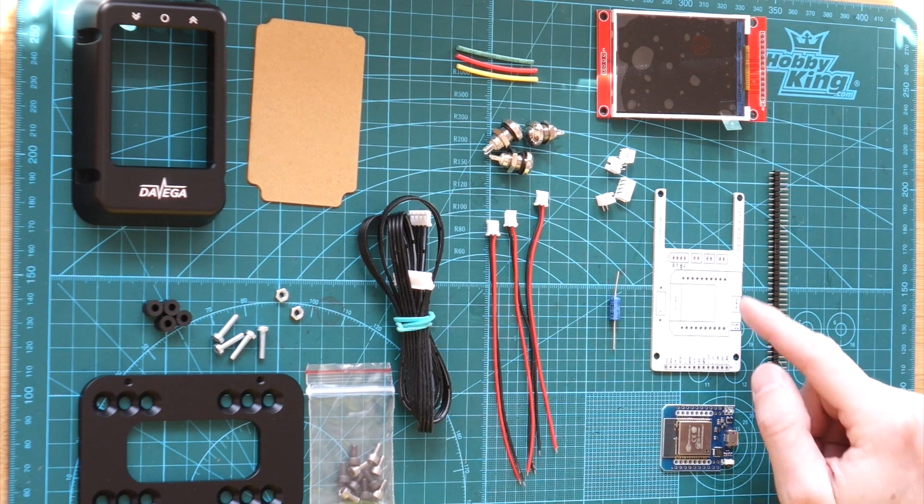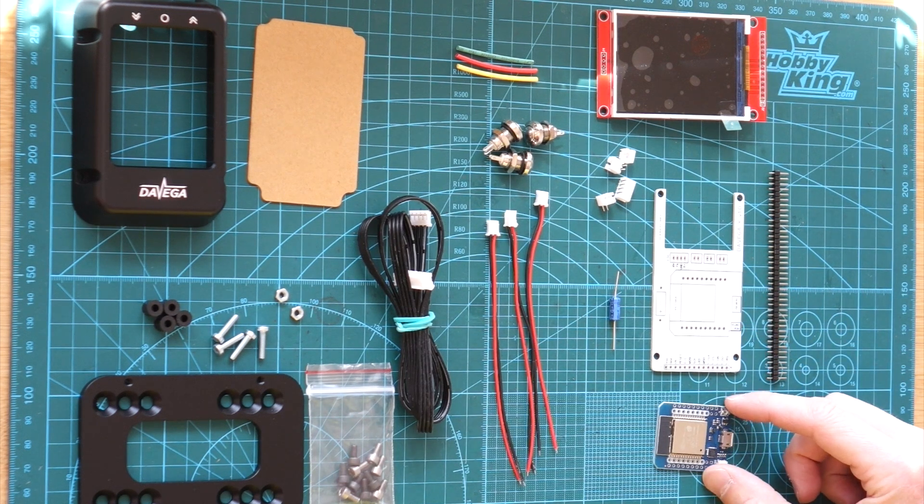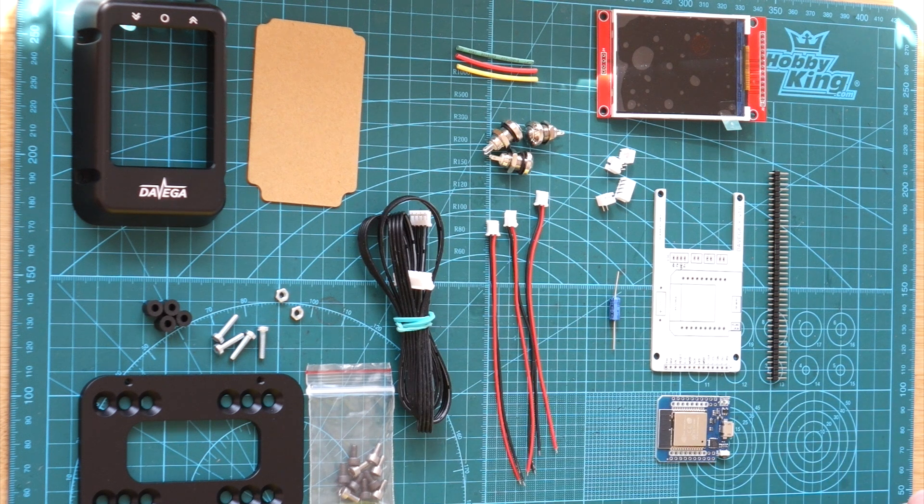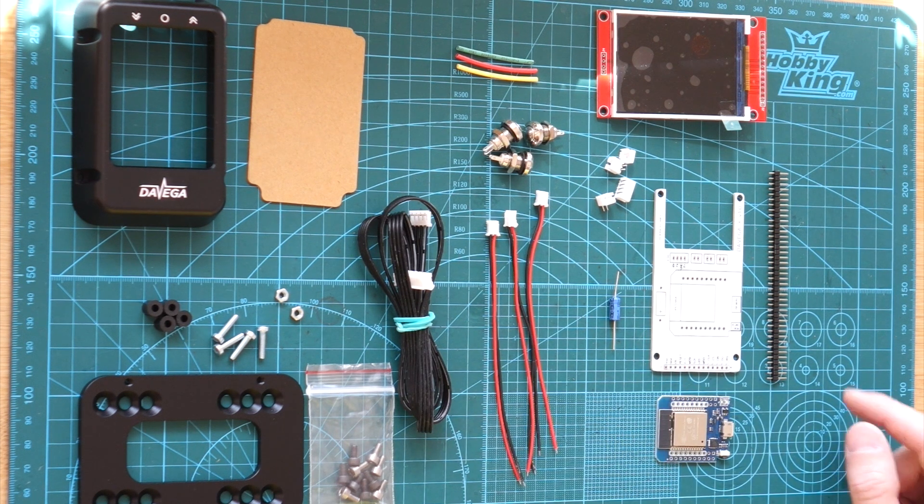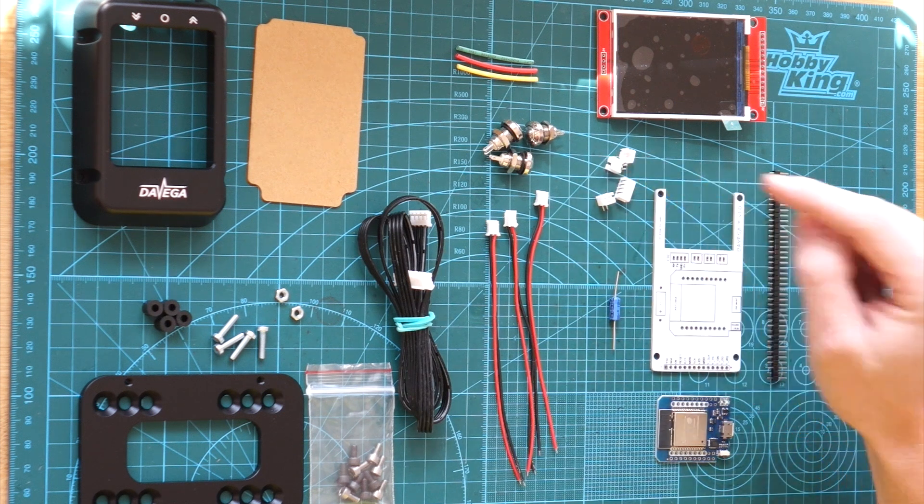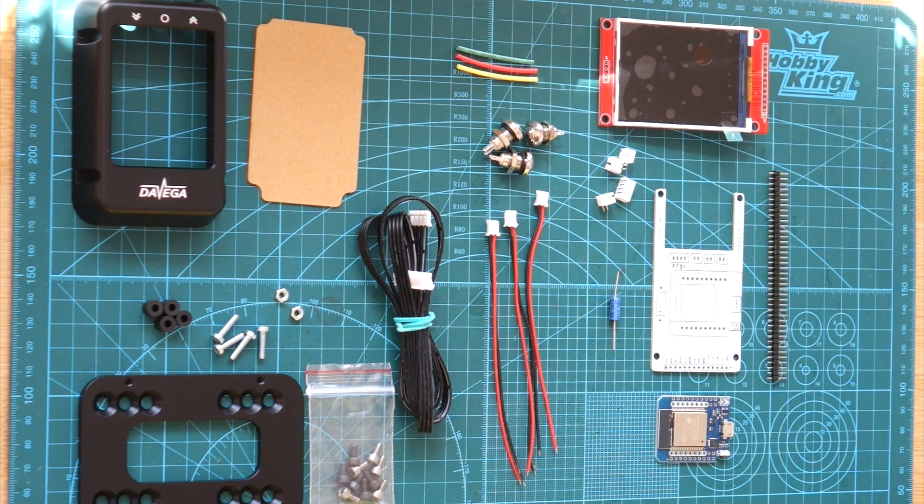And then we have the DEVEGA PCB, an ESP32 development board, electrolytic capacitor, some headers, some connectors and the 2.8 inch display.